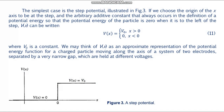If we choose the origin of the x-axis to be at the step and set the arbitrary additive constant so that the potential energy of the particle is zero to the left of the step, V(x) can be written as formula number 11, where V₀ is a constant. We may think of V(x) as an approximate representation of the potential energy for a charged particle moving along the axis of a system of two electrodes separated by a very narrow gap held at different voltages. Figure 3 illustrates this step potential.